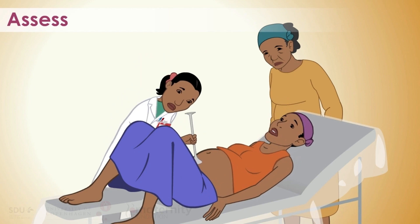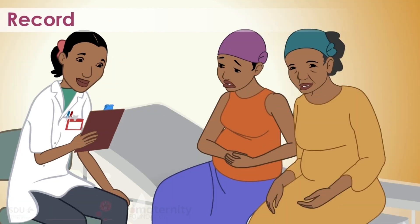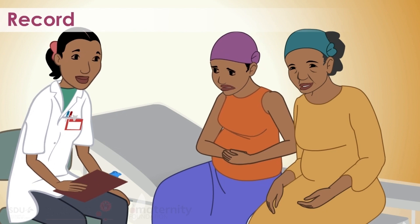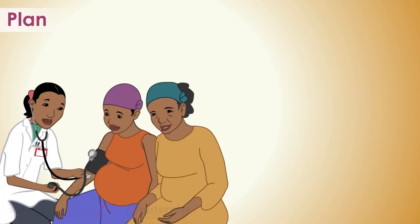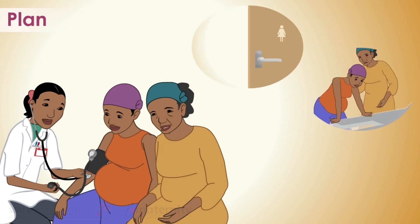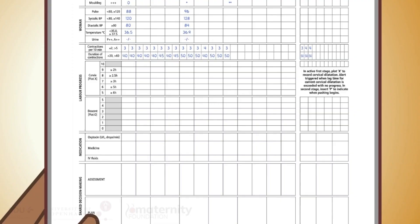Assess the well-being of the woman and her fetus and progress of labor. Record labor observations. Check the reference and compare labor observations with reference values in the alert column. Plan by deciding whether and what interventions are required in consultation with the woman and document accordingly. See the action card for more information on the different alert values for the active first stage.